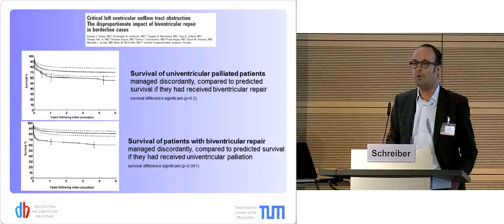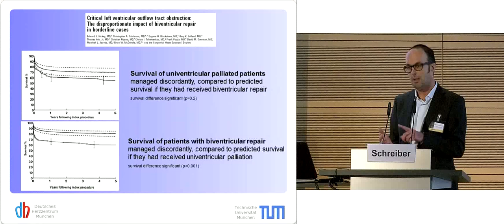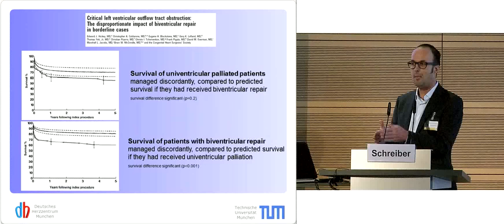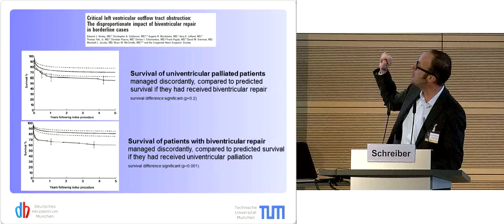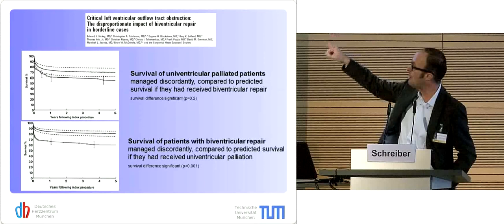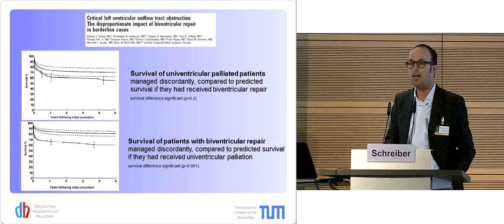What is quite disturbing is that if you get it wrong — if you push a patient with a very small aortic valve, a minute left ventricular outflow tract, and smallish LV structures into a biventricular pathway — you might end up with multiple reoperations. Survival of univentricular palliative patients managed discordantly compared to predicted survival is worse, and the same goes for biventricular repair.